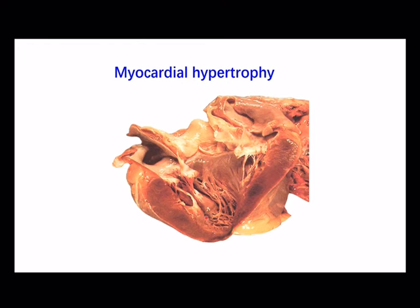This is a gross specimen of myocardial hypertrophy. Here is the left ventricle. We notice that the lumen of the left ventricle is enlarged, and also the ventricular wall is thickened. If the increasing workload exceeds the compensatory capacity of myocardial cells, cardiac failure may develop.